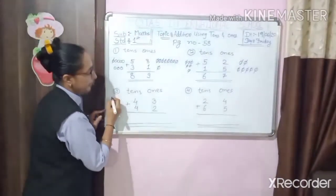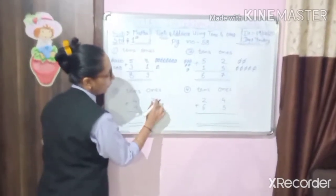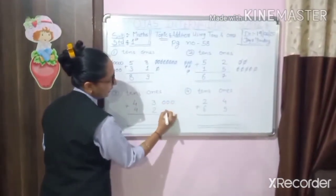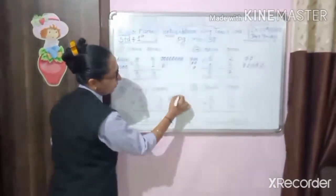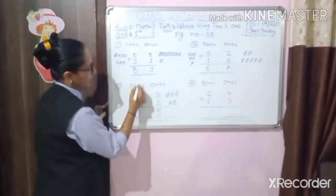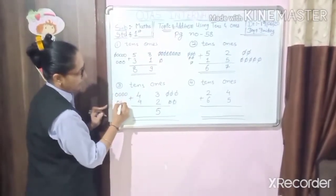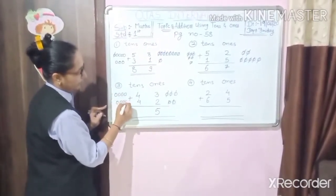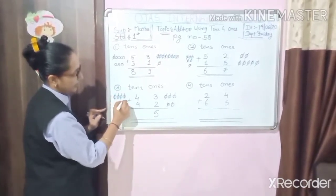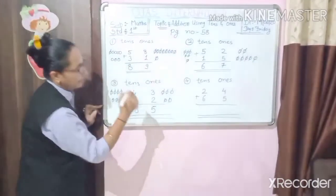Now number 3: 43 plus 42. So what we have to do here? Draw 3 circles and draw 2 circles. Count together: 1, 2, 3, 4, 5, 6, 7, 8. So we have to write here 8.